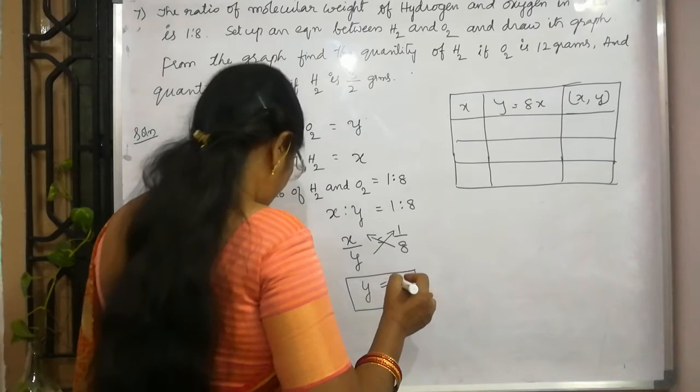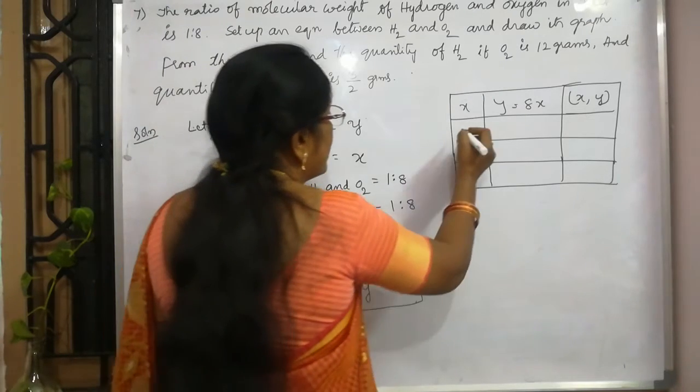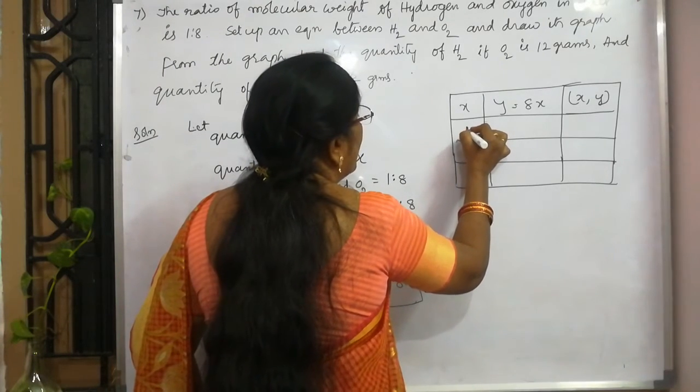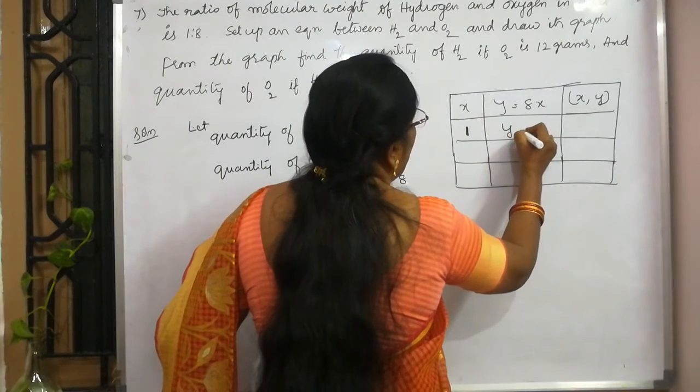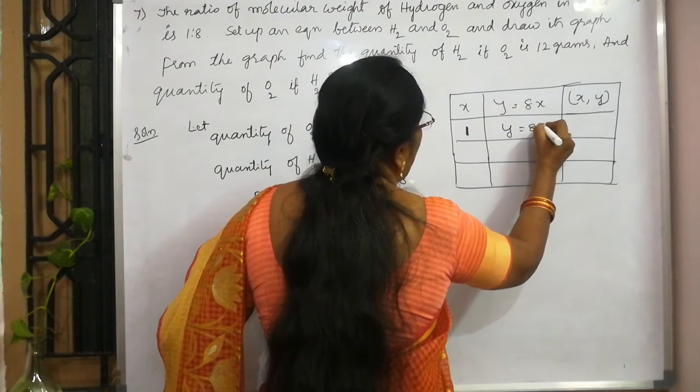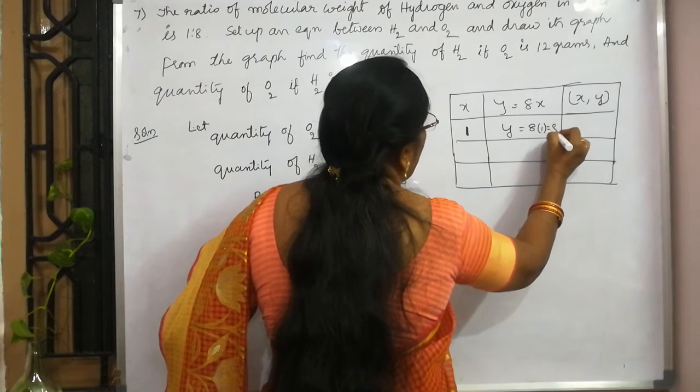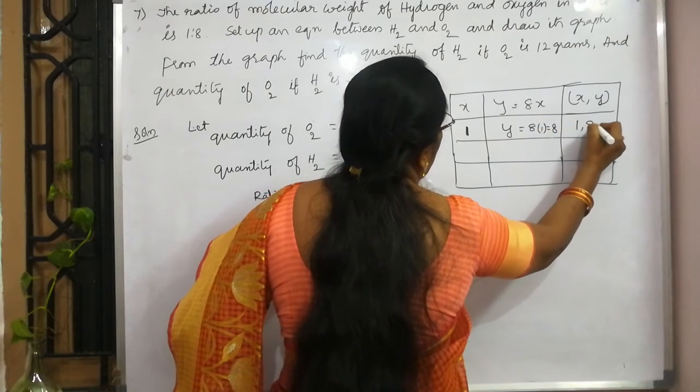Now, let us suppose x is equal to 1. Then, y will be 8 into 1. That is equal to 8. So, this is 1 comma 8.